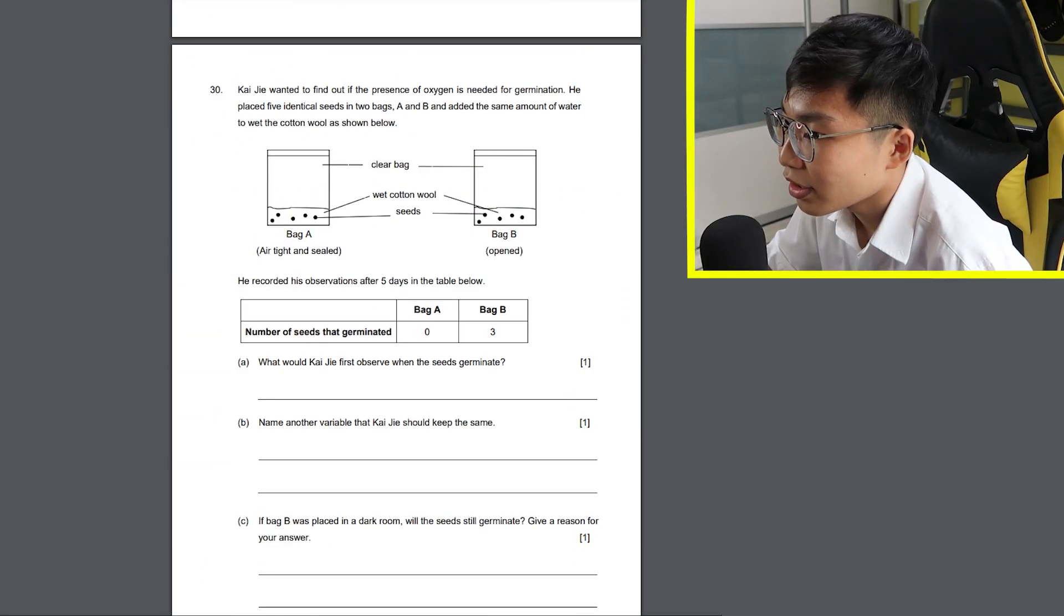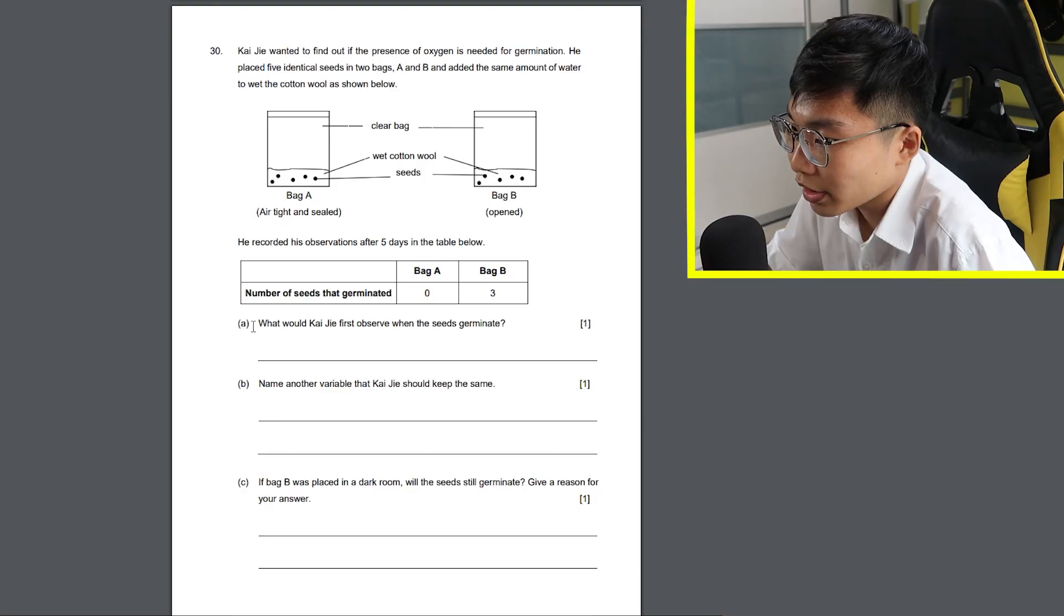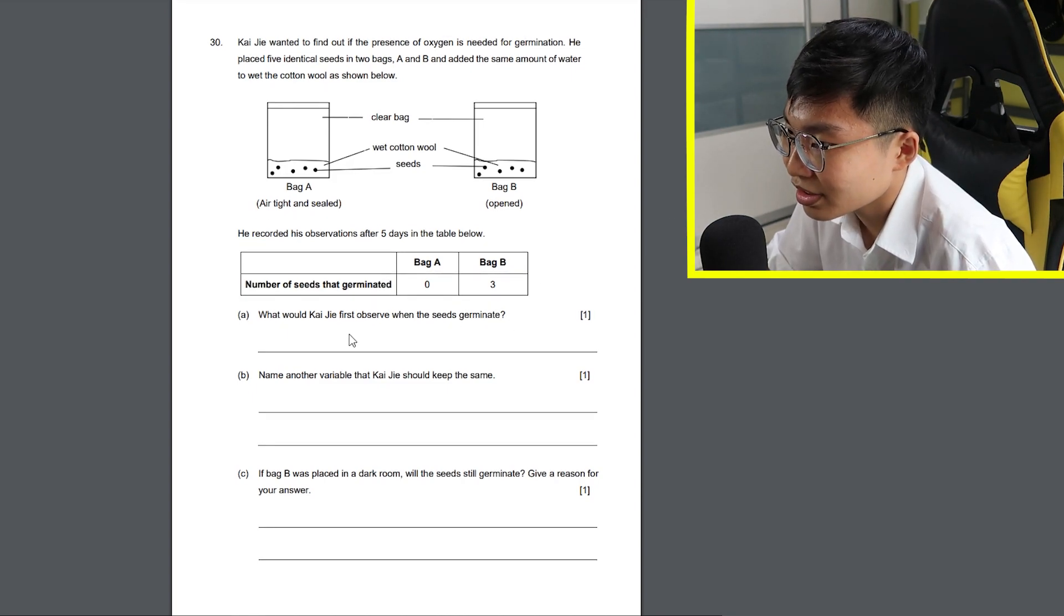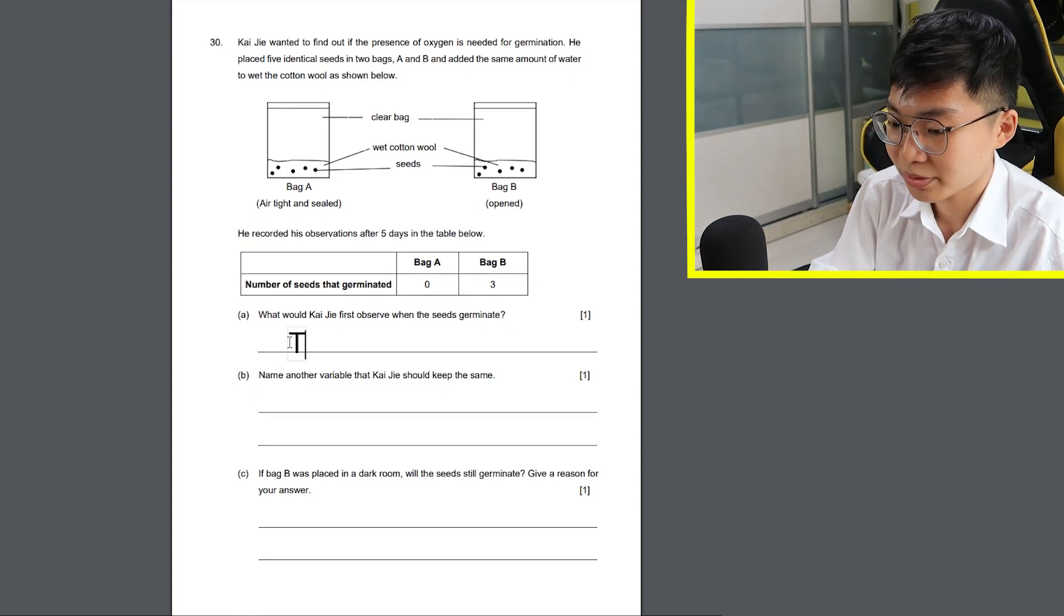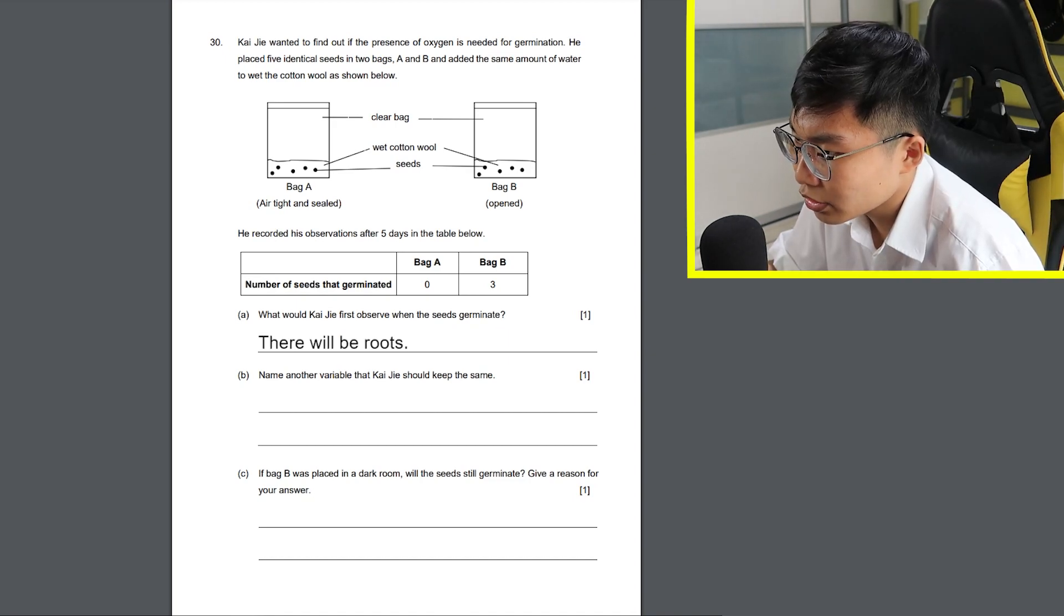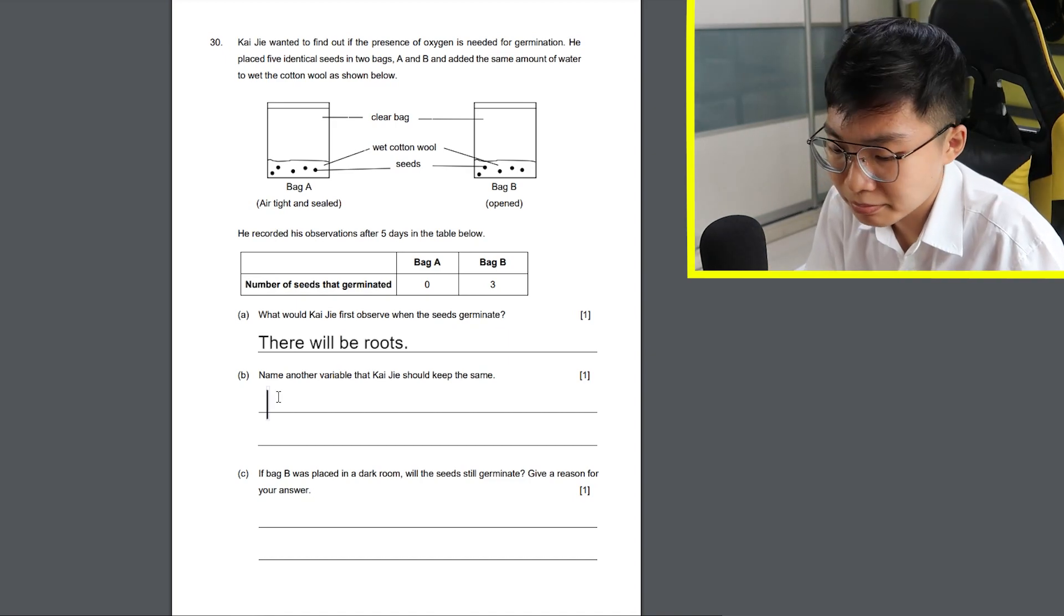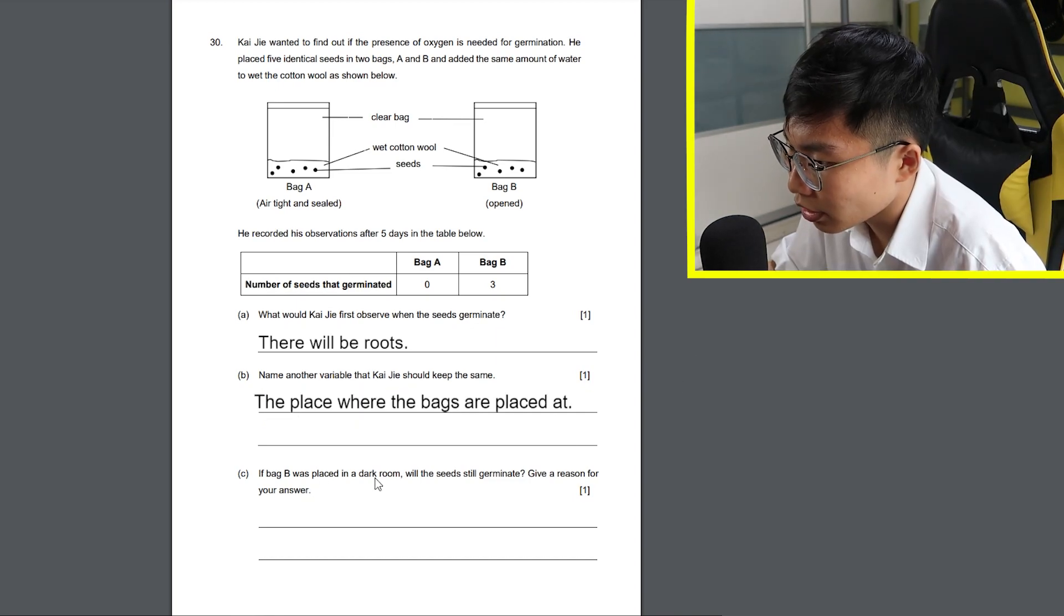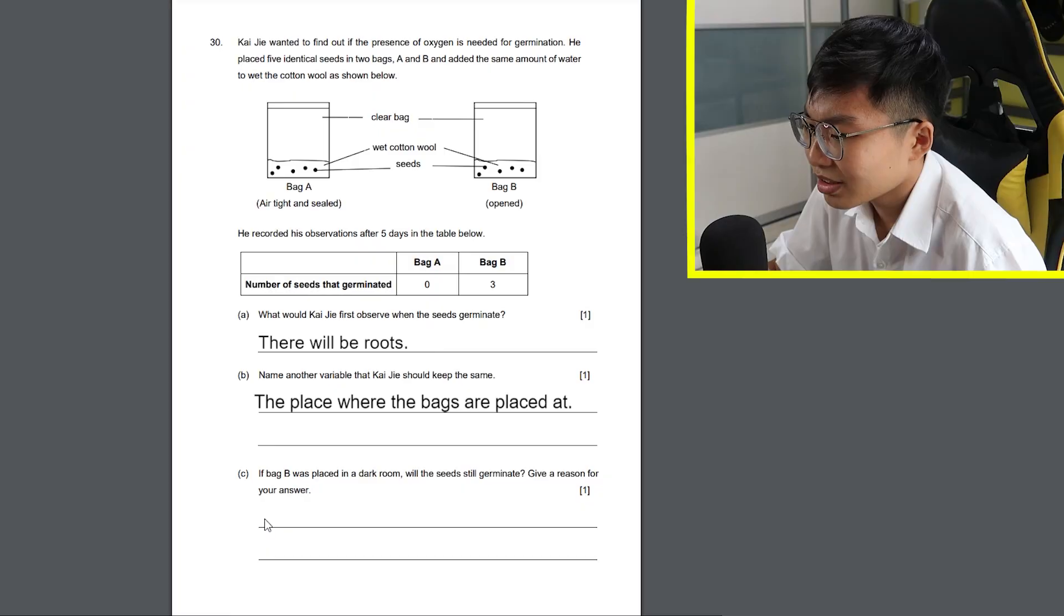And now for some open-ended questions. Oh my god. Let's see this. What will Kaetie first observe when the seeds germinate? What? There will be roots? Name another variable that Kaetie should keep the same. If bag B was placed in a dark room, will the seeds still germinate? Okay, now this is getting a bit hard. I assume not because there's no sunlight.